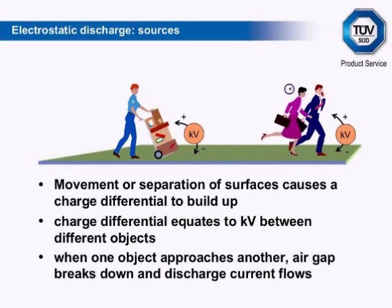The severity levels in IEC 61000-4-2 represent four categories of environment depending on their likely minimum relative humidity and the presence or absence of static-generative materials. Level 1 is 35% minimum relative humidity with anti-static control and a 2 kV contact or air discharge, going right up to level 4, which is 10% relative humidity, a synthetic-rich environment, with 8 kV contact and 15 kV air discharge.